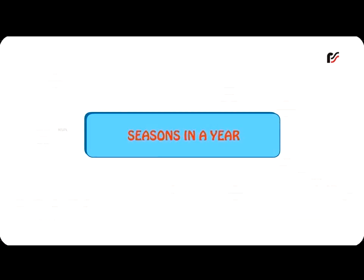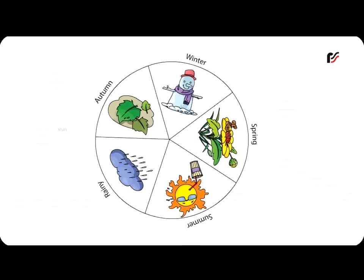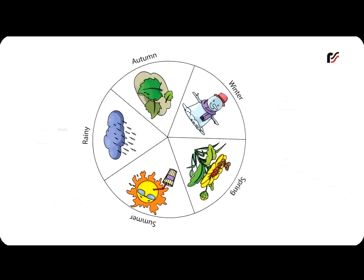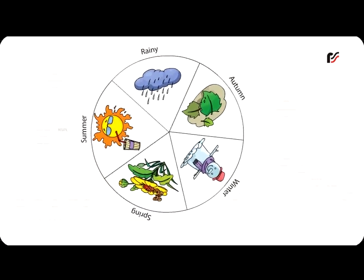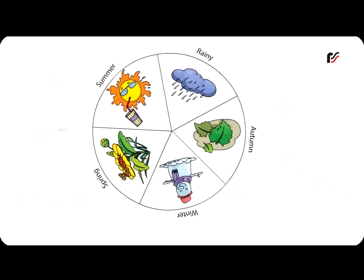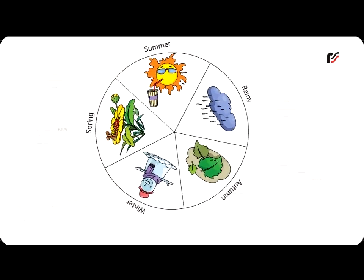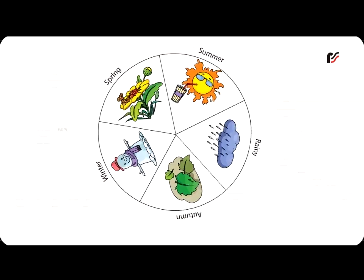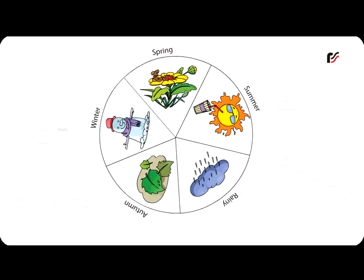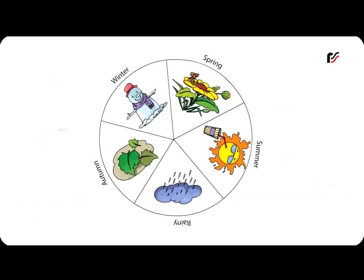Seasons in a year: In India, we mainly have these seasons — winter, spring, summer, rainy, and autumn.